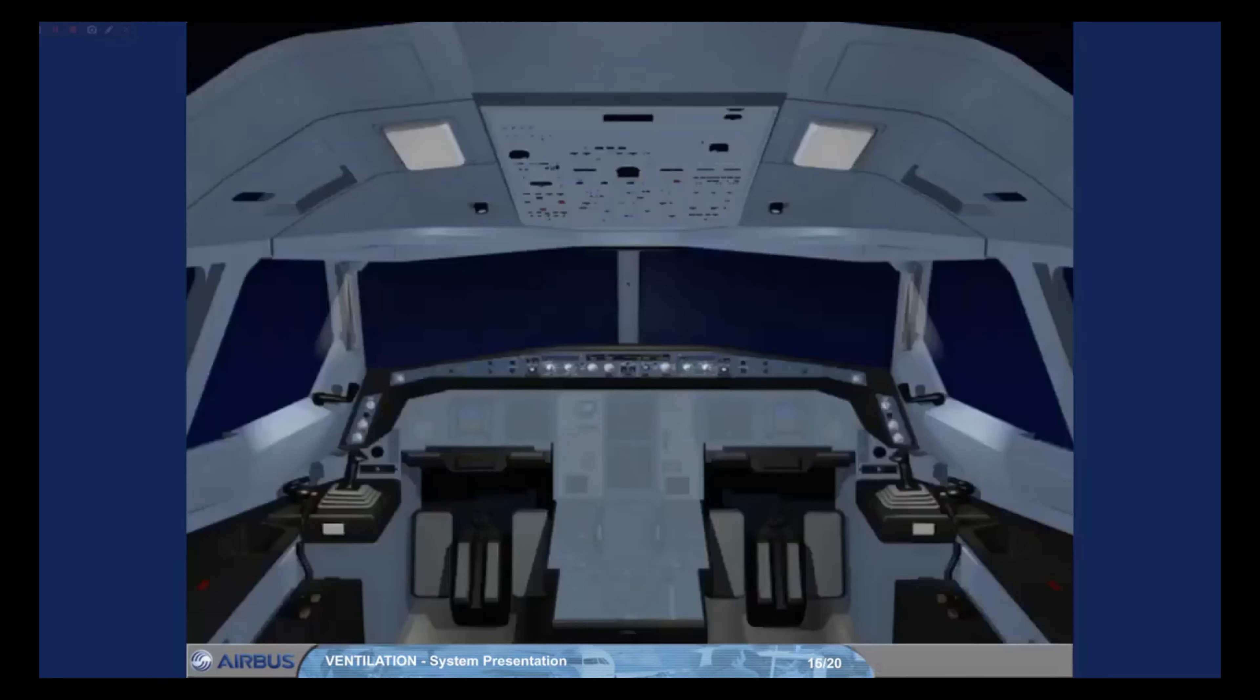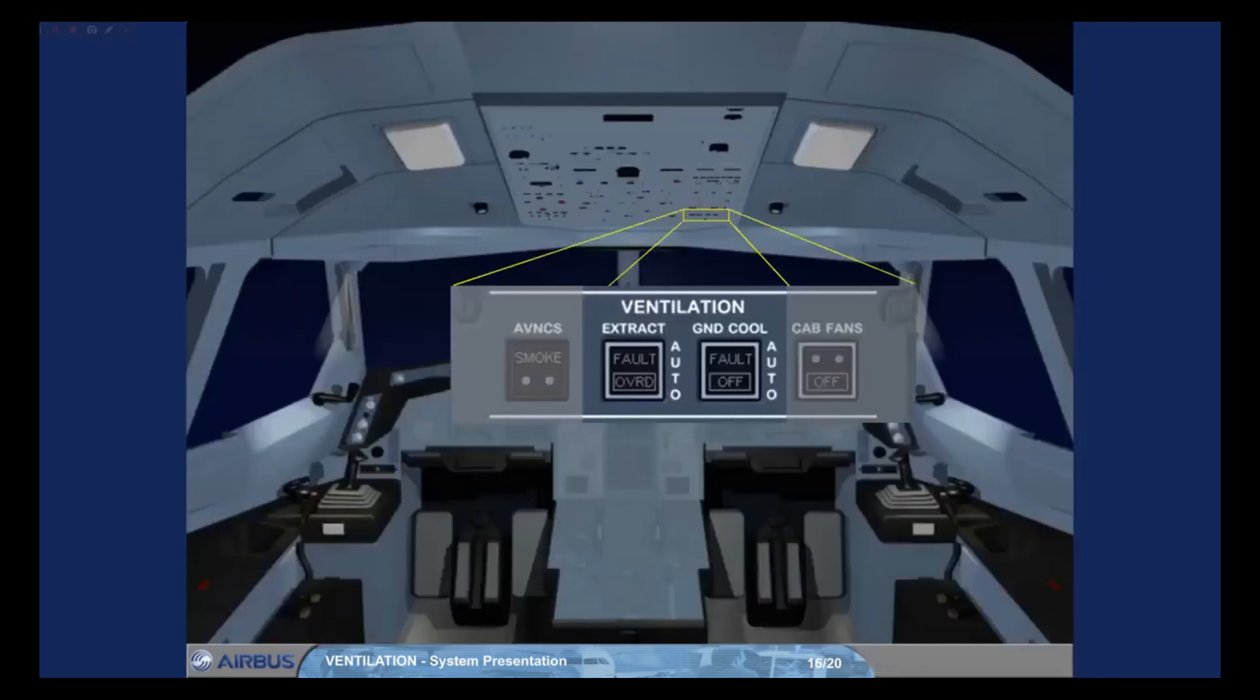A ventilation panel on the overhead panel contains two push button switches associated with the ventilation system. During the preflight cockpit scan, you should confirm that these switches are in the lights out position. The avionics ventilation system will then operate automatically and require no pilot input.